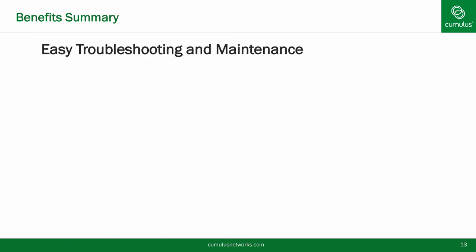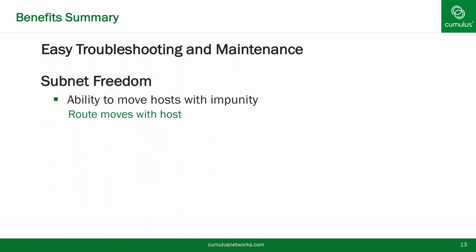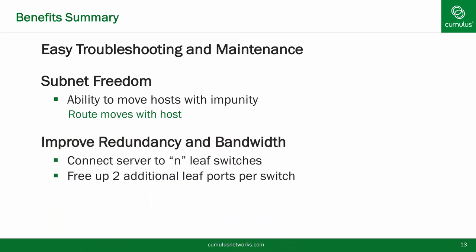In conclusion, routing on the host with Cumulus Quagga provides a vast array of benefits. We can allow for much easier troubleshooting, as MLAG and Spanning Tree are no longer required anywhere in the network. We can allow for subnet freedom — not only placing any server anywhere, but also dynamically moving hosts around the data center. We can improve redundancy and bandwidth, connecting the host to as many leaf switches as desired. We can use additional ports previously used for intra-MLAG communication to connect to hosts and spines. And lastly, we can use Anycast for load balancing. Thank you for watching and have a great day.